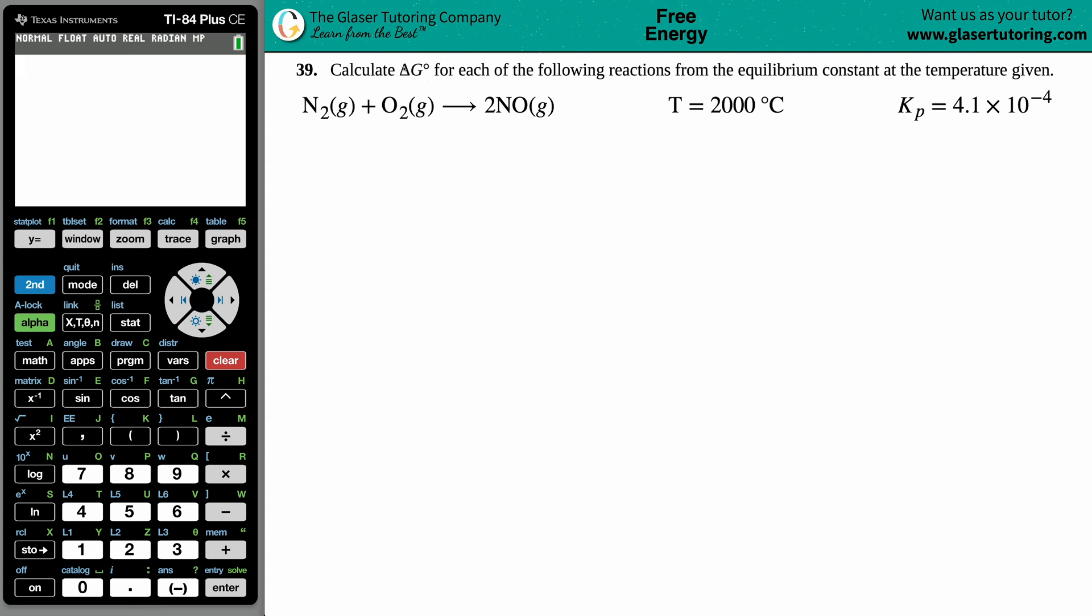Number 39: Calculate the ΔG° for each of the following reactions from the equilibrium constant at the temperature given. We have N₂ gas plus O₂ gas yields 2NO gas. They told us that we have a temperature of 2000°C with a Kp, an equilibrium constant, of 4.1 × 10⁻⁴.